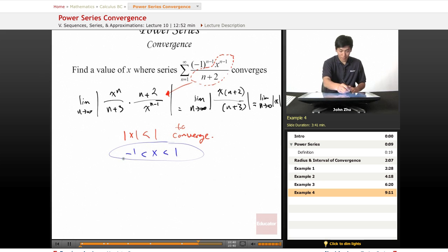To find the interval of convergence, we not only need this general interval, but we must check at each bound whether it converges or diverges. We'll check if x can equal 1 or -1.